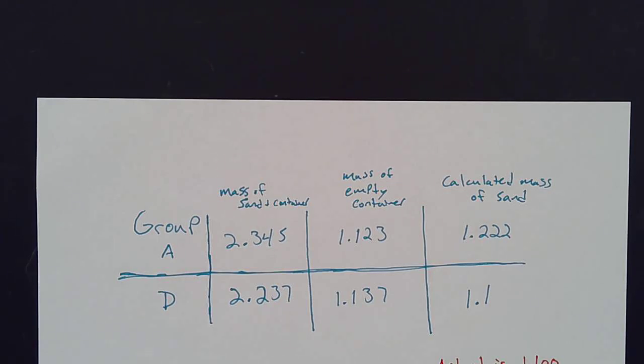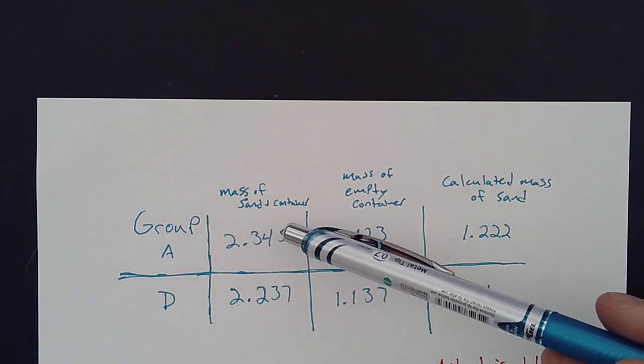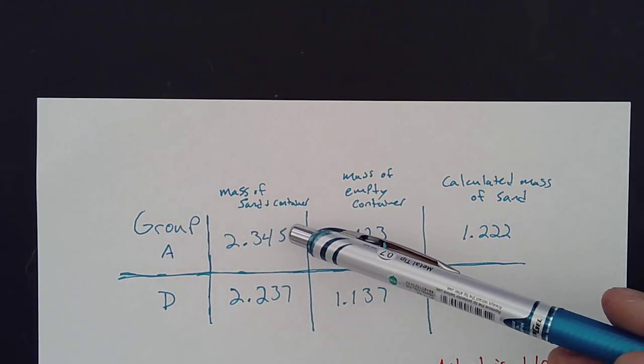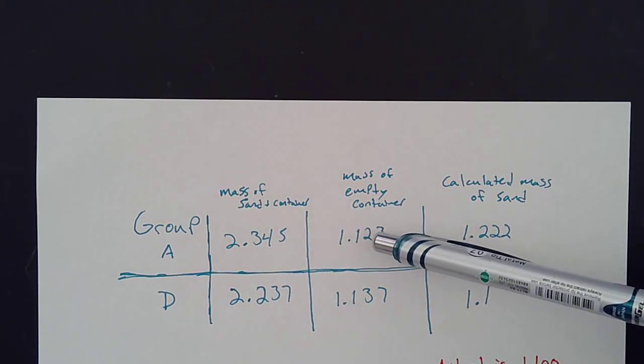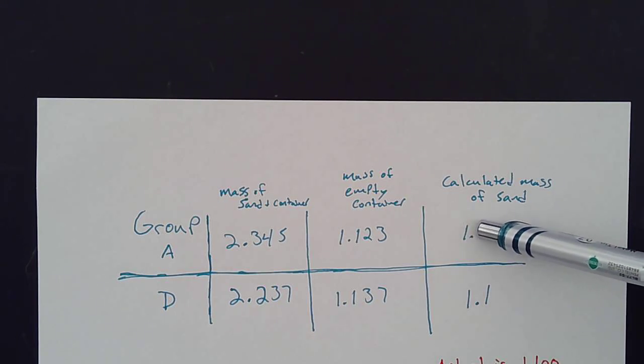Before I jump into this topic, what I really want you to do is to think about what's going on here. So group A, they take the mass of a container containing sand plus the empty container itself, then they subtract what the empty container was, and they get this. They get 1.222.